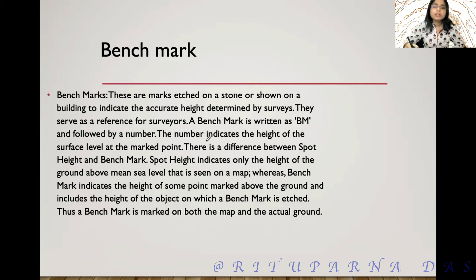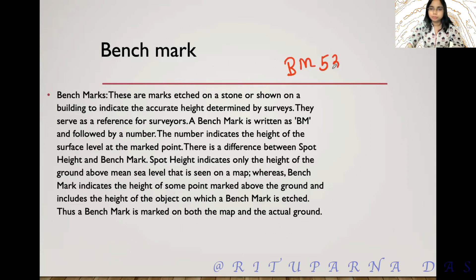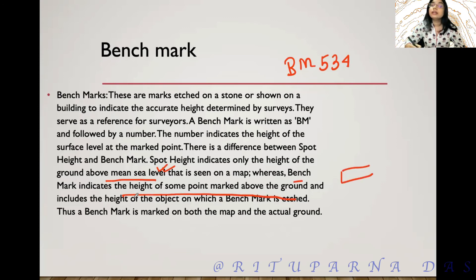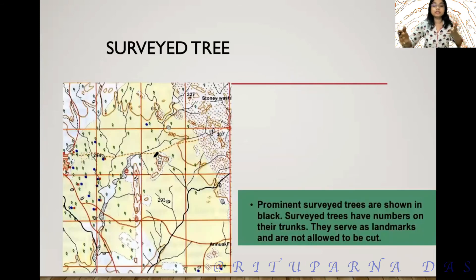To find the height of a place we can also use a benchmark. Generally this can be written on a building to indicate the accurate height, and it is determined by survey — written as 'BM 534.' Even at railway stations, the BM can be written on the yellow board. The basic difference between BM and spot height is: spot height indicates the height above mean sea level, but for a benchmark the height is marked above a particular local ground point, not above sea level.